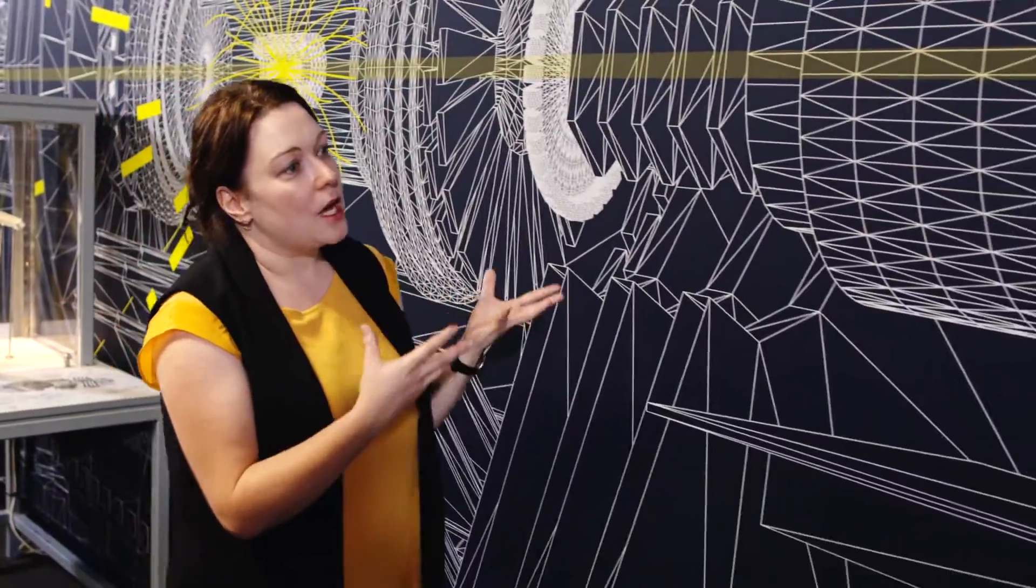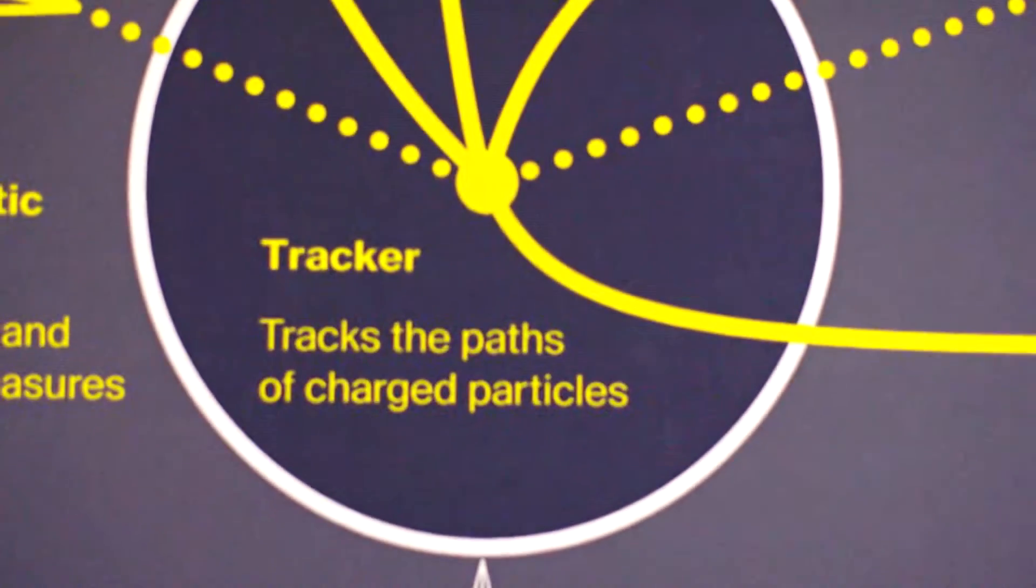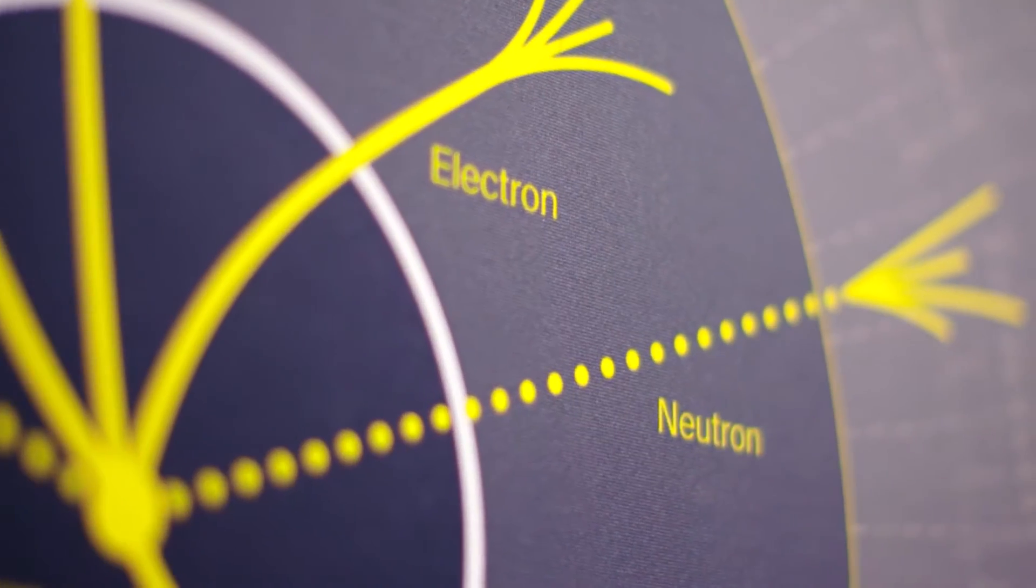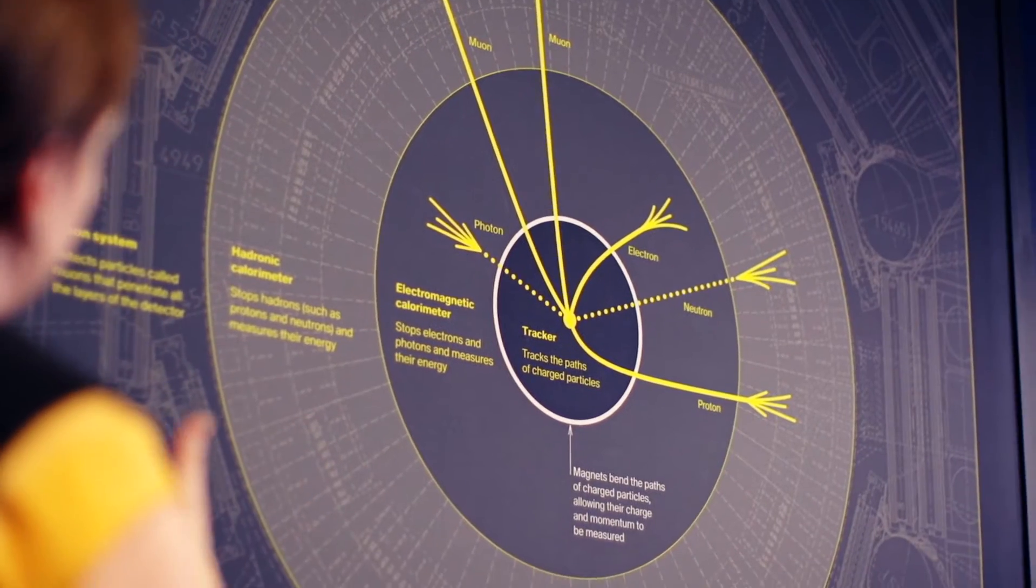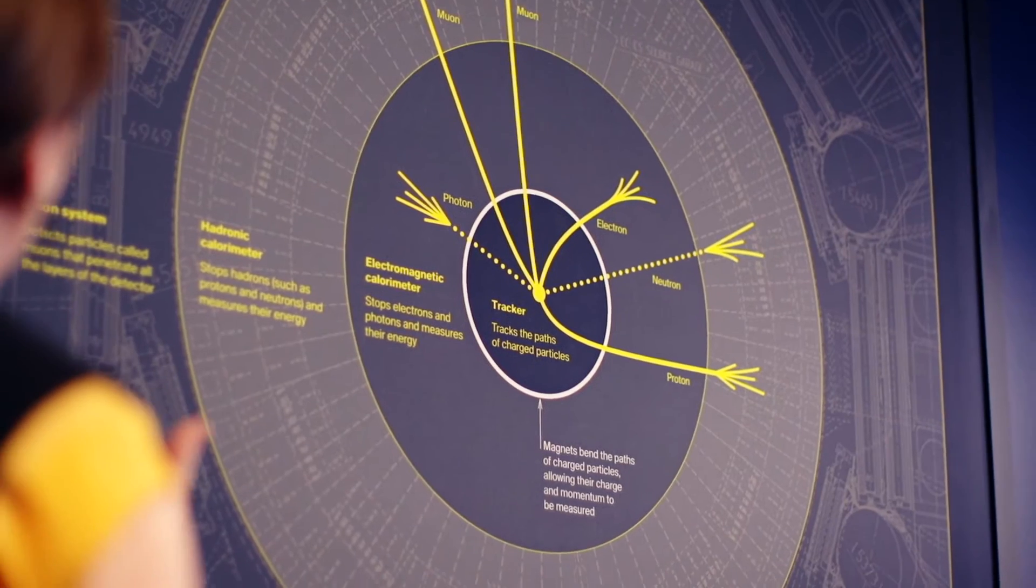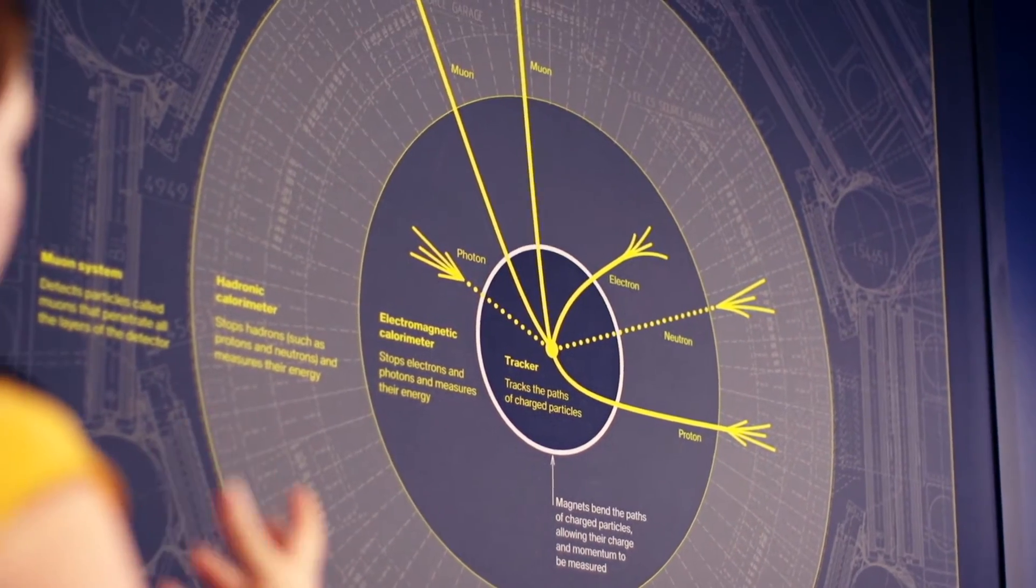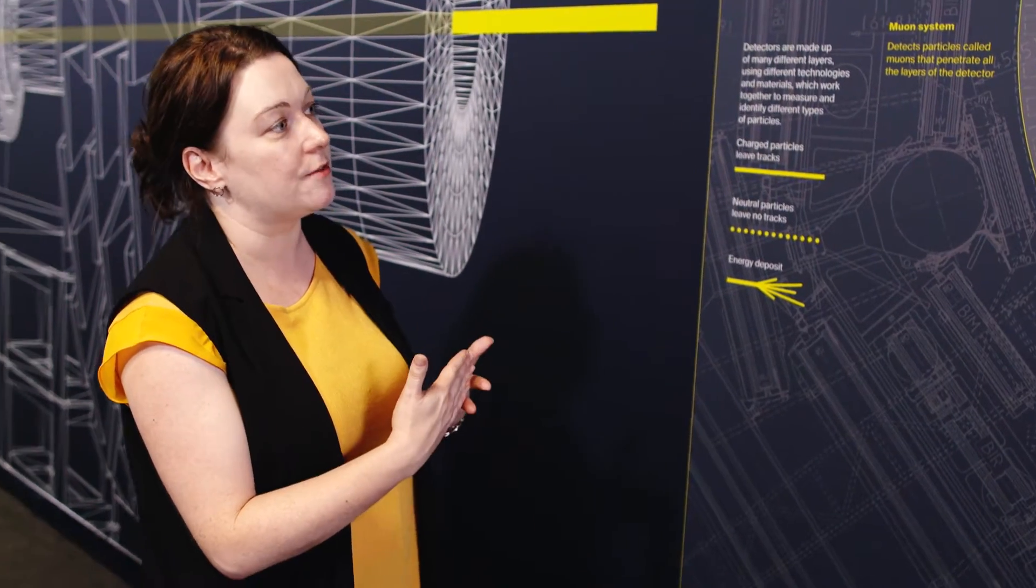So ATLAS and CMS are designed a bit like an onion skin. There are different layers inside and each layer is designed to do something ever so slightly different to tell us what the particles are doing. Each layer is made of different kinds of materials and uses different kinds of technologies that we can use to measure the characteristics of each different kind of particle.